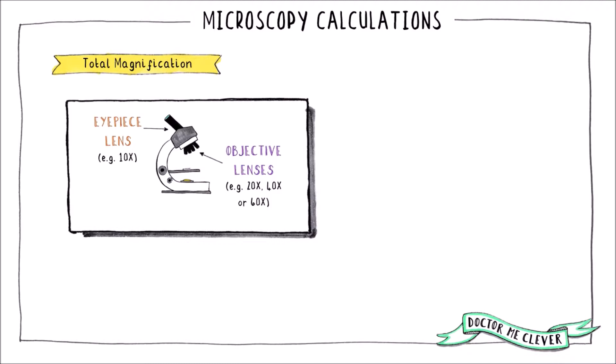A light microscope uses both an eyepiece lens and an objective lens to magnify an image of a sample. Each lens has its own magnifying power and can magnify the image a certain number of times.